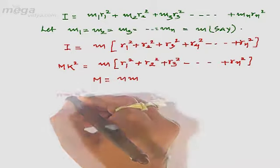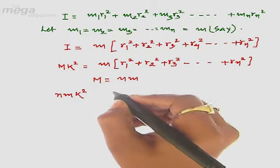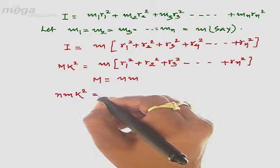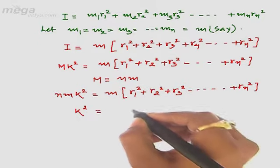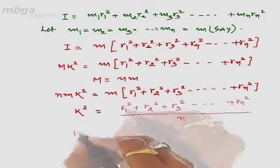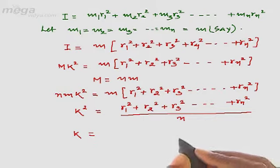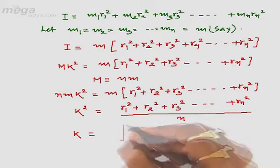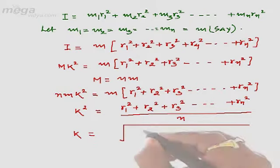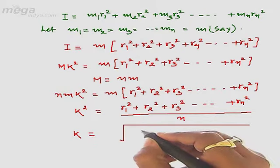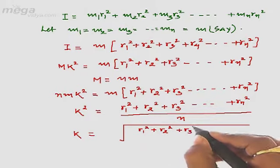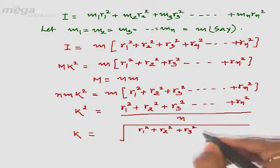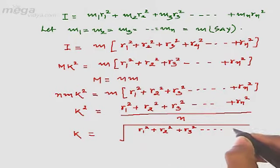So from above, we can write n·m·k². Thus k² can be written as the mean of the sum of squared distances, and the radius of gyration k can be calculated as the square root of the mean square of distances of different particles from the axis of rotation.